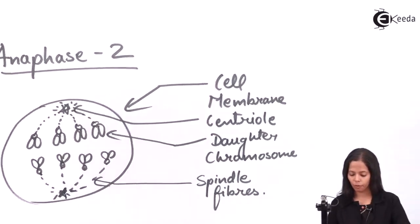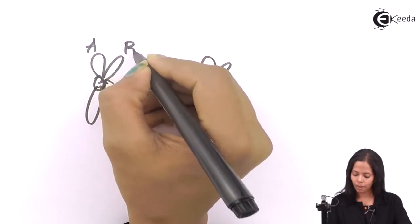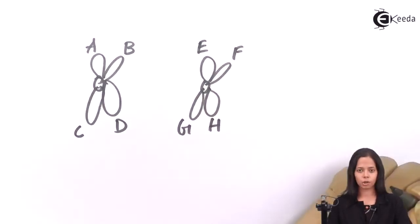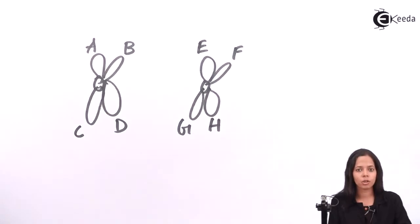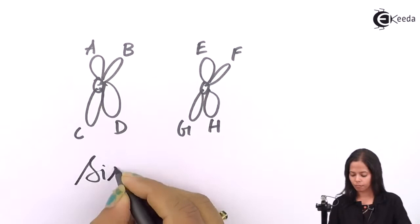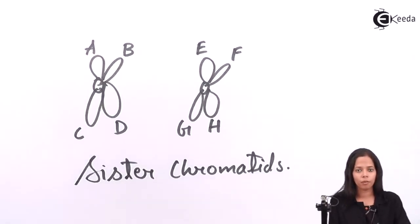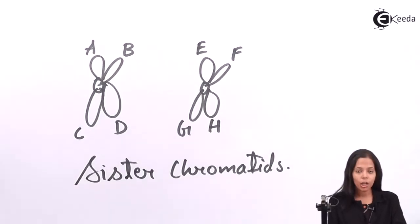Let me explain sister chromatids and non-sister chromatids with a diagram. Assume one chromosome has arms labeled A, B, C, D and another chromosome has arms E, F, G, H. Sister chromatids are the chromatids present on the same chromosome — so A and B are sister chromatids, C and D are sister chromatids. In short, chromatids on the same chromosome are sister chromatids.